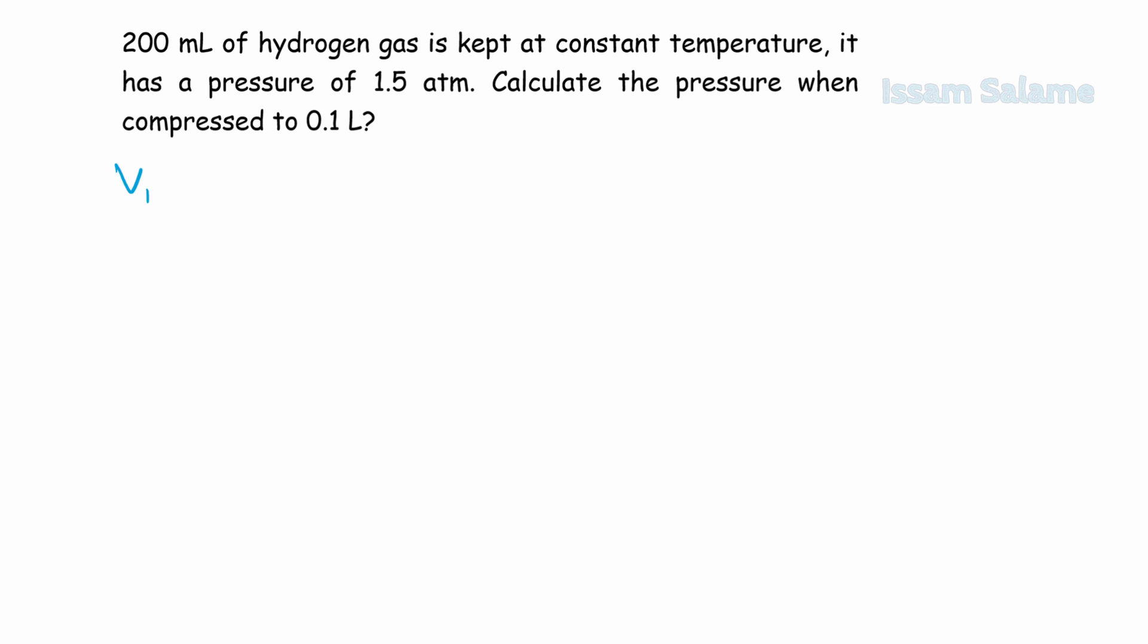We start writing the given. Volume initial is 200 milliliters, pressure initial is 1.5 atmosphere. The final pressure is required to be calculated, and final volume is 0.1 liters.